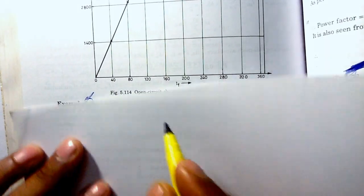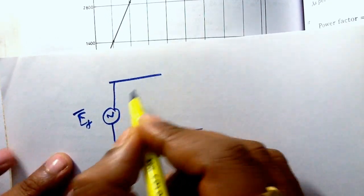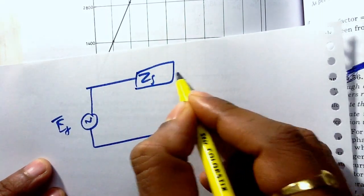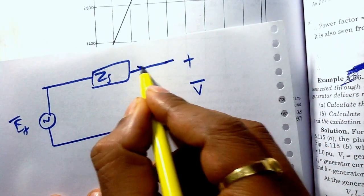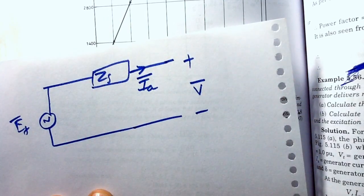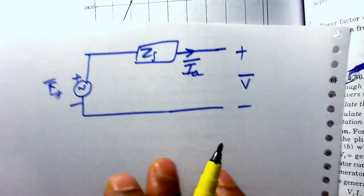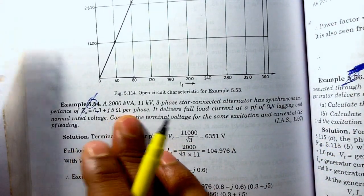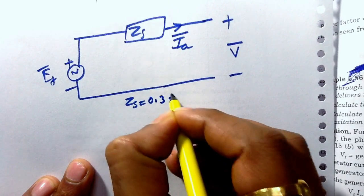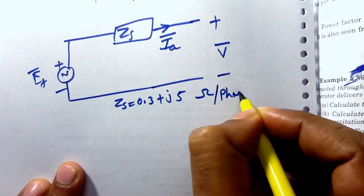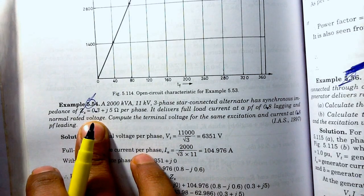I am going to draw the alternator circuit. This is the internal EMF of the machine, this is the synchronous impedance, and this is the terminal voltage. Since this is an alternator, current will be delivered by this machine. The value of Zs is given as 0.3 + j5 ohm per phase.